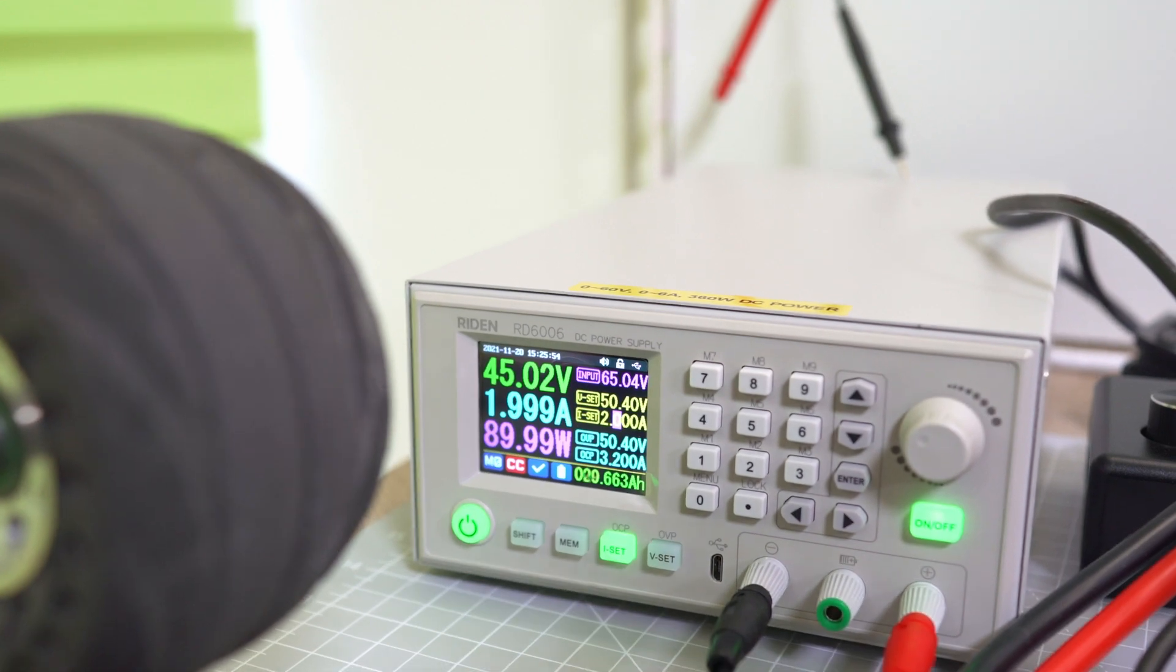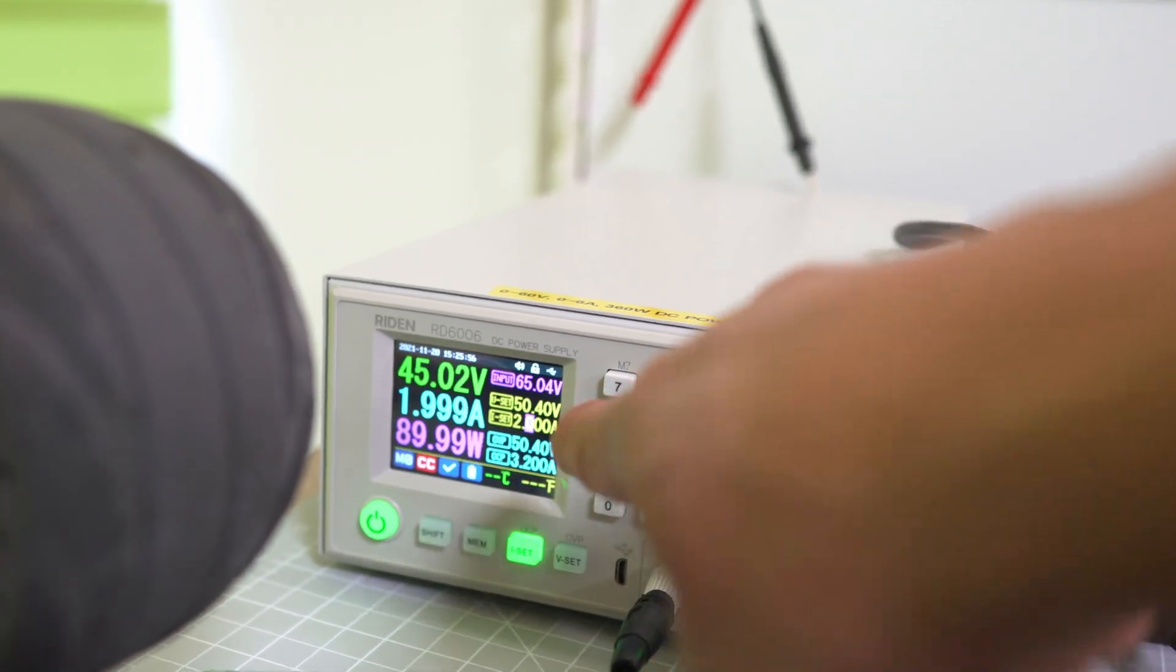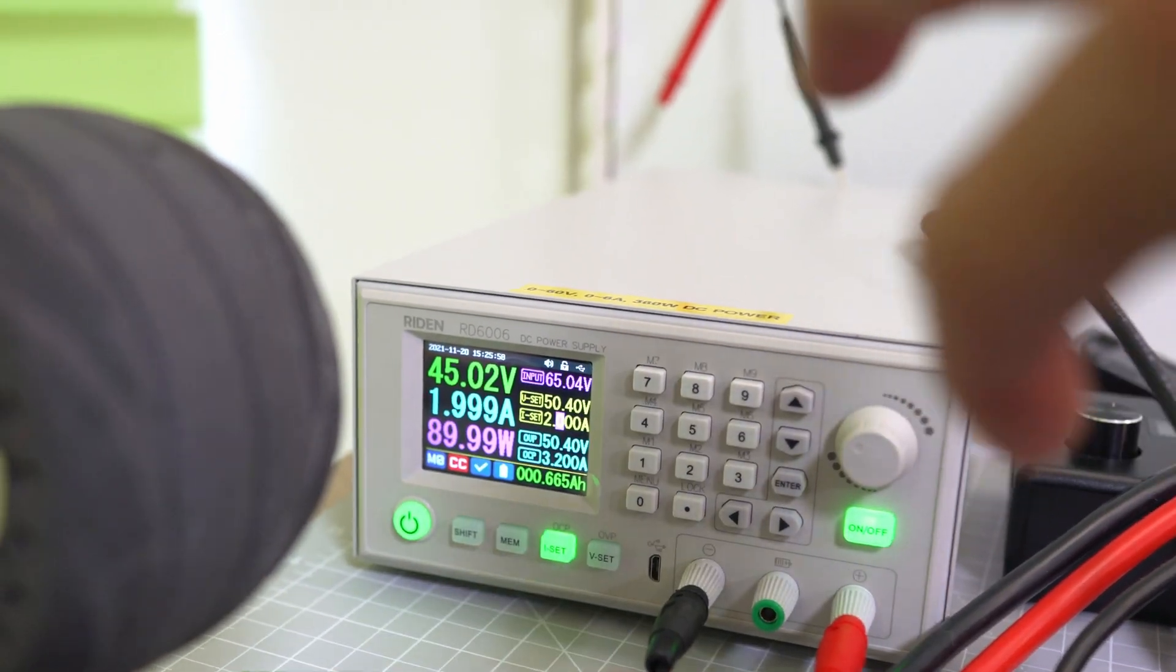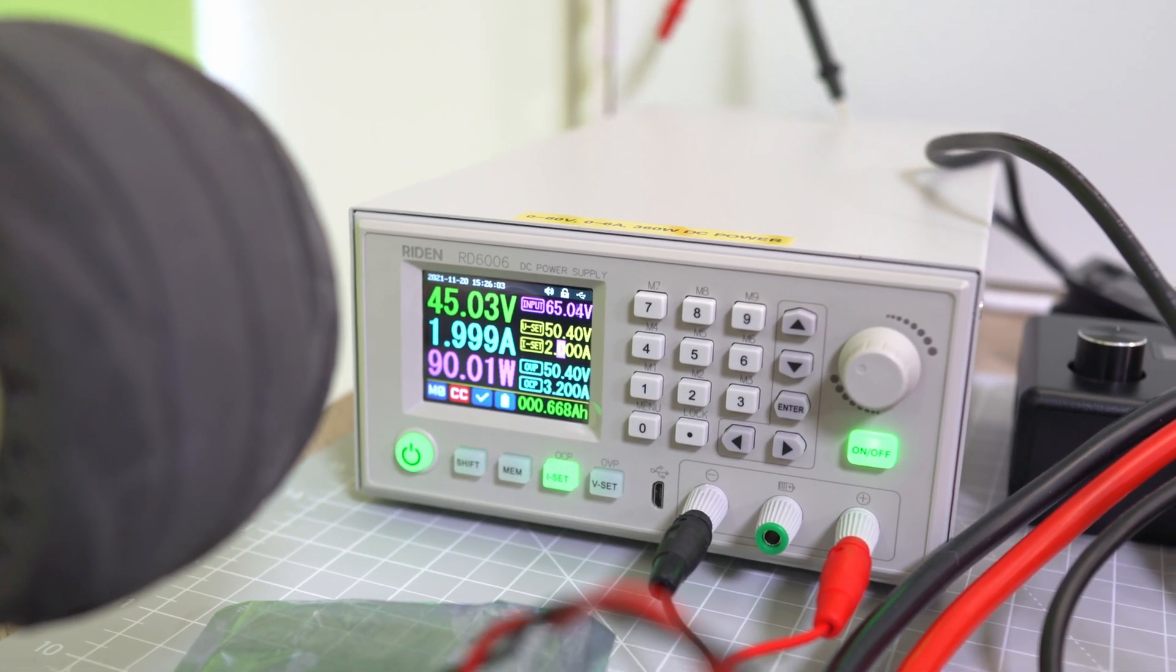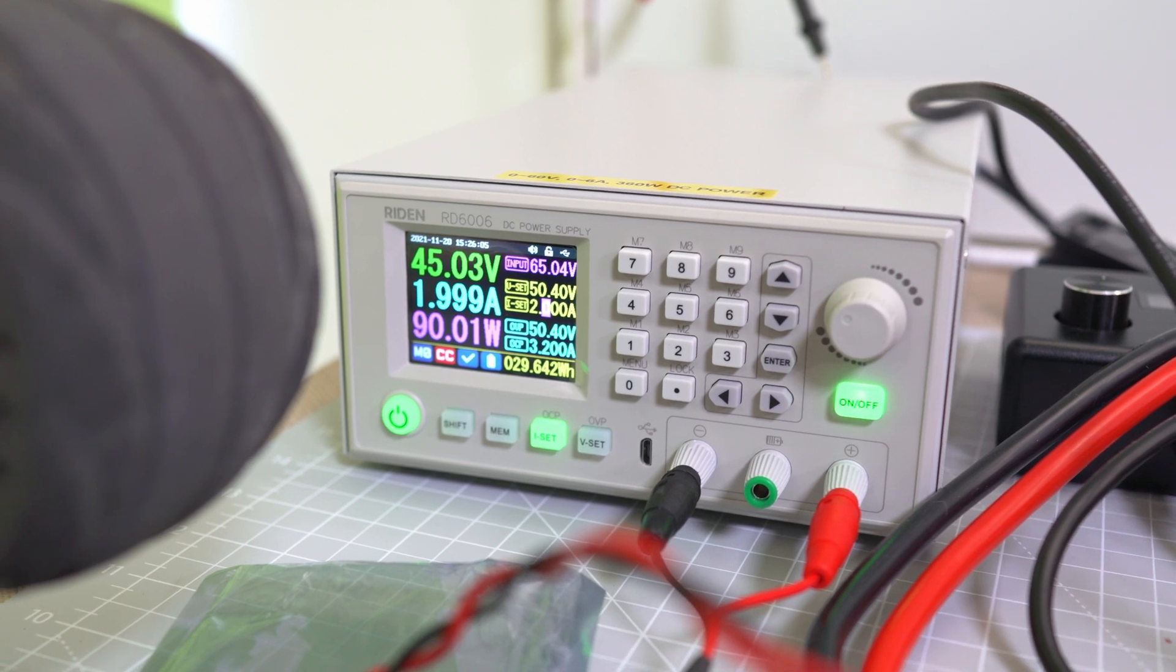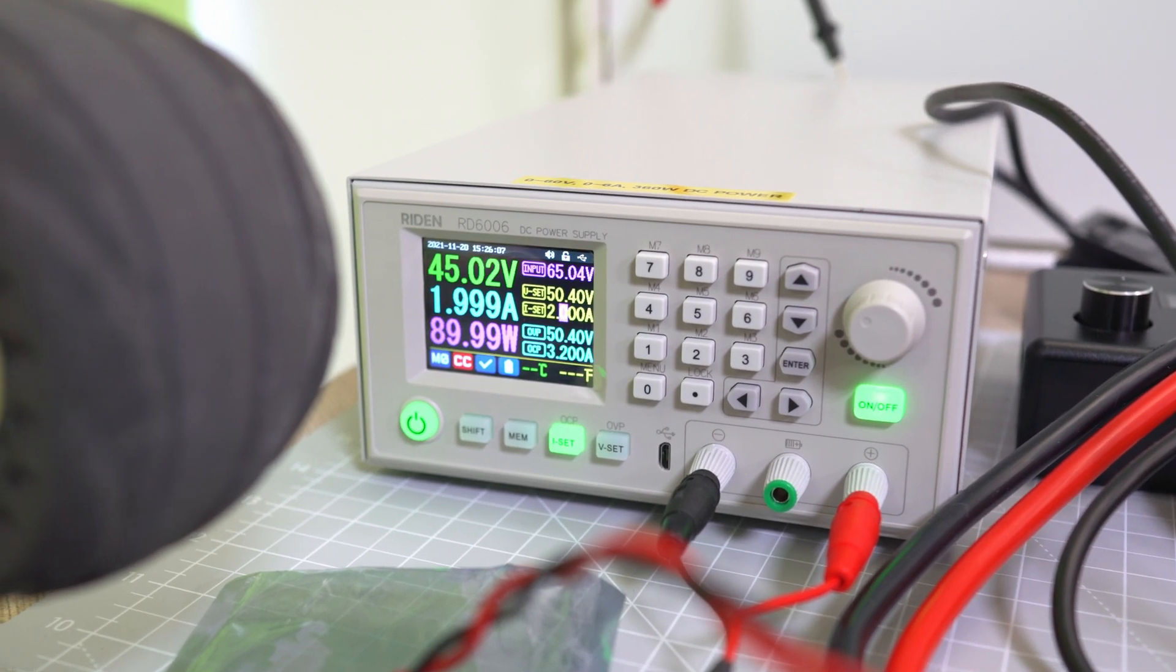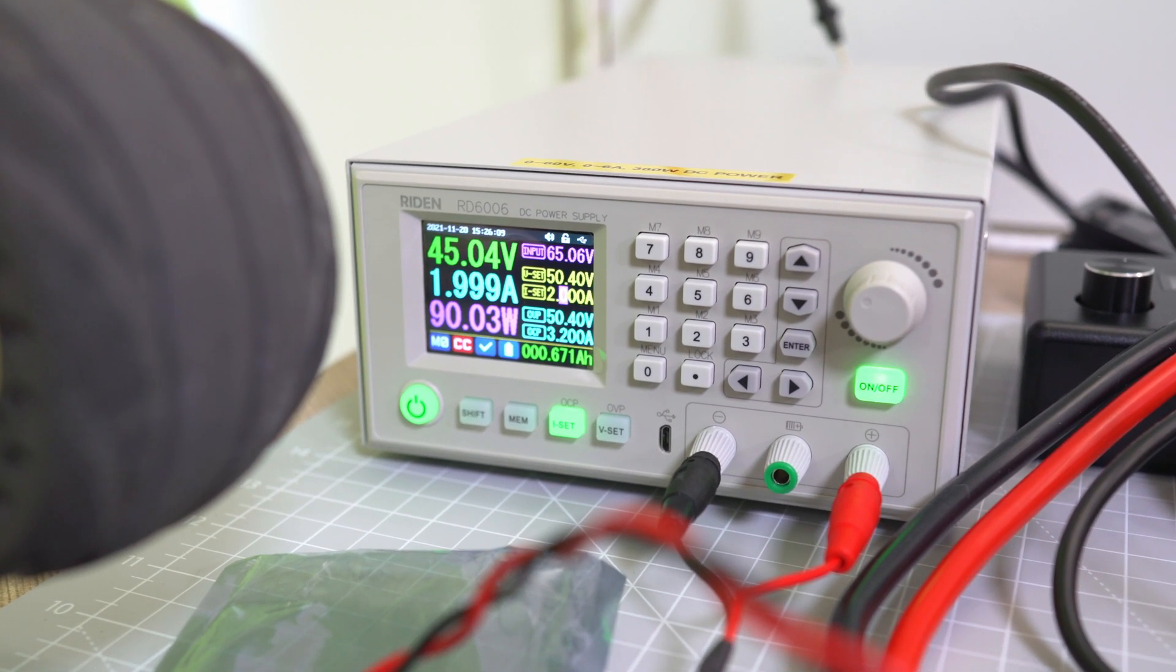unbalanced batteries. Then when it nears there, you can trickle charge it—set it to like 0.3 amps—and that will actually help the BMS balance it, rather than going at full. Because if you go at 1 or 2 amps, it's just gonna stop charging and you're gonna be stuck.